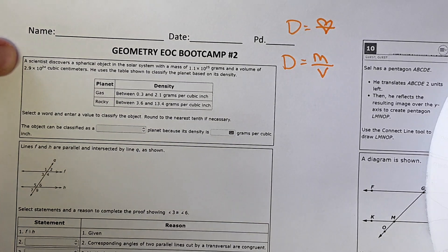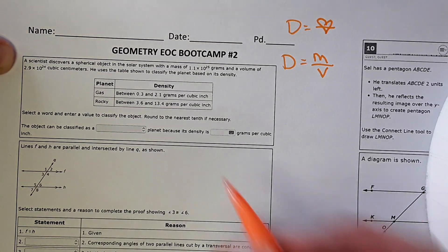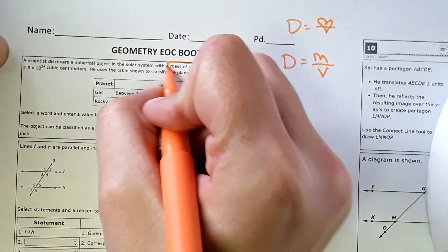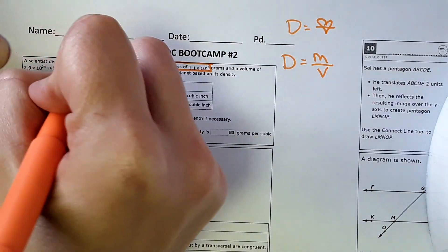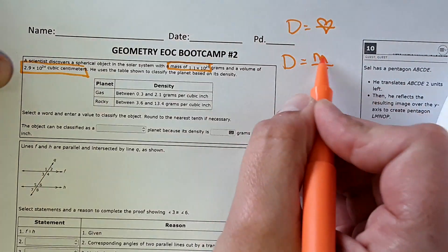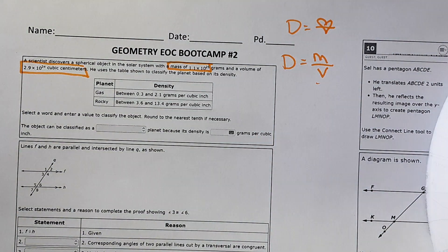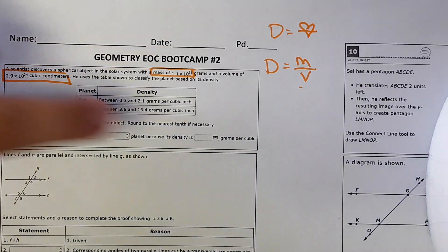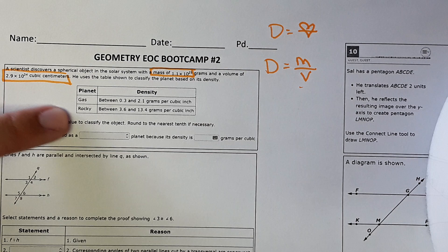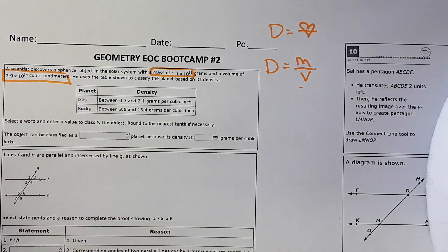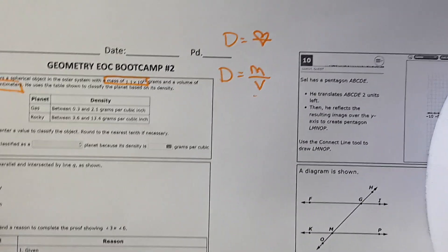For this problem, a scientist discovers a spherical object in the solar system with a given mass and volume. He uses the table shown to classify the planet based on density. So you have to use mass and volume to find the density and then use that density to classify it as a gas or rocky planet.